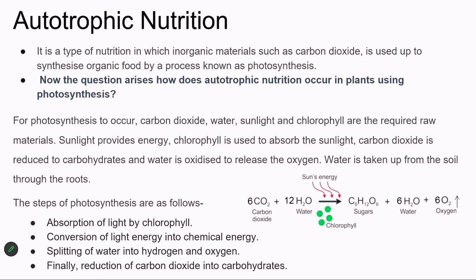Organic materials contain carbon, oxygen, and hydrogen. Inorganic materials lack one of these — for example, carbon dioxide has carbon and oxygen but not hydrogen. That is why plants use inorganic materials to synthesize organic food via photosynthesis. To carry out photosynthesis, four basic raw materials are required: carbon dioxide, water, sunlight, and chlorophyll.